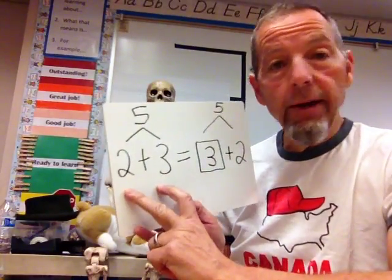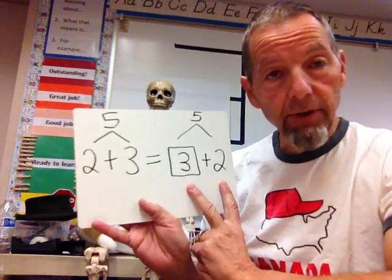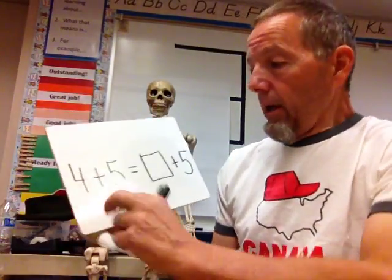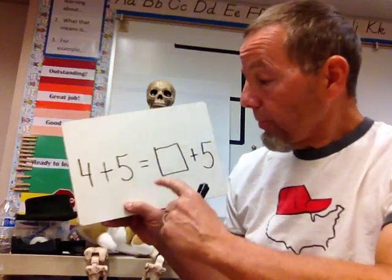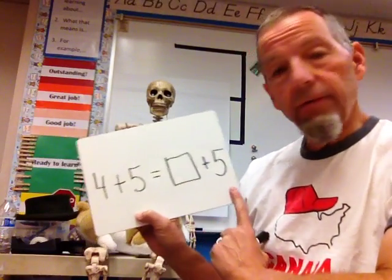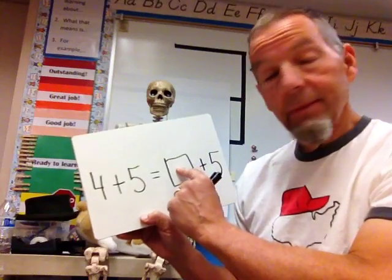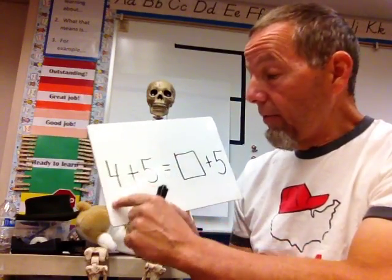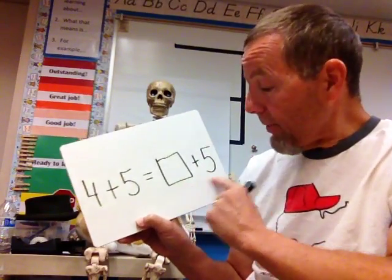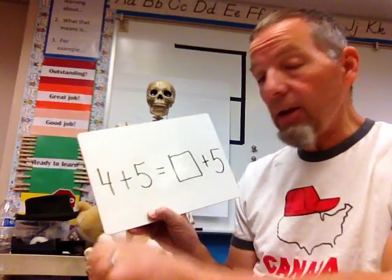So, that's what this is. That's what we did here. 2 plus 3 equals 3 plus 2. Let's look at one more. 4 plus 5 equals blank plus 5. You think you know what goes in the box? It's not 9. 4 plus 5 equals 9 but not when I've got this over here. I'm looking for my equal sign.